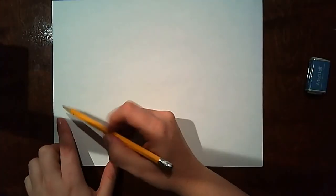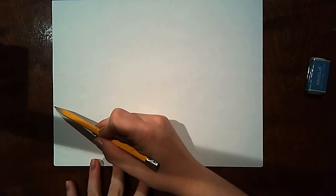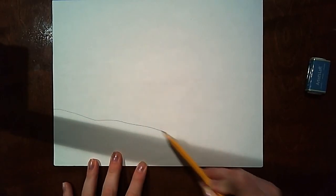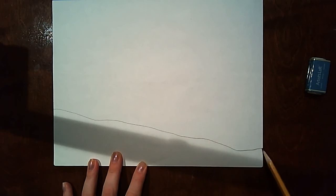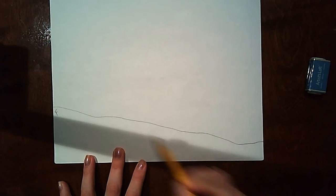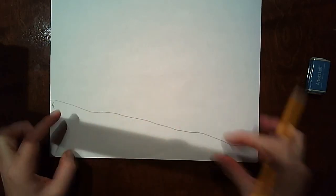My first section, I'm going to start on the left side of my page and I'm going to draw kind of a curvy line going down. If it helps, you can write F. This is my foreground. This piece of land is closest to me.